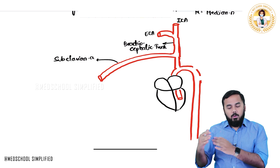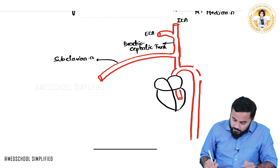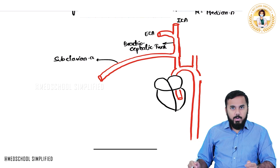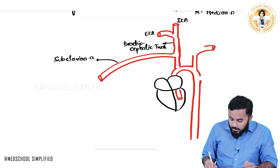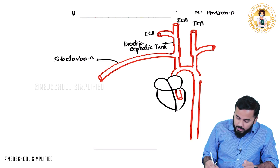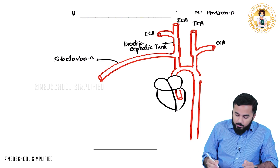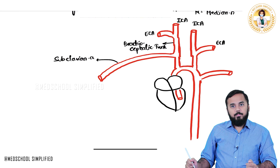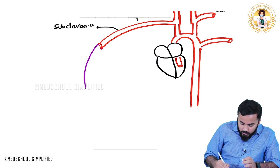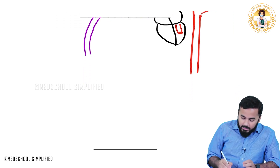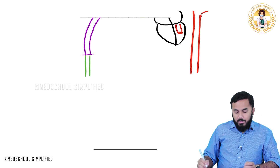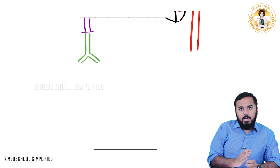On the left side we have the left common carotid artery, which also divides into left internal carotid and left external carotid artery. And we have the left subclavian artery. The subclavian artery ends and continues as the axillary artery, which will then continue down as the brachial artery.